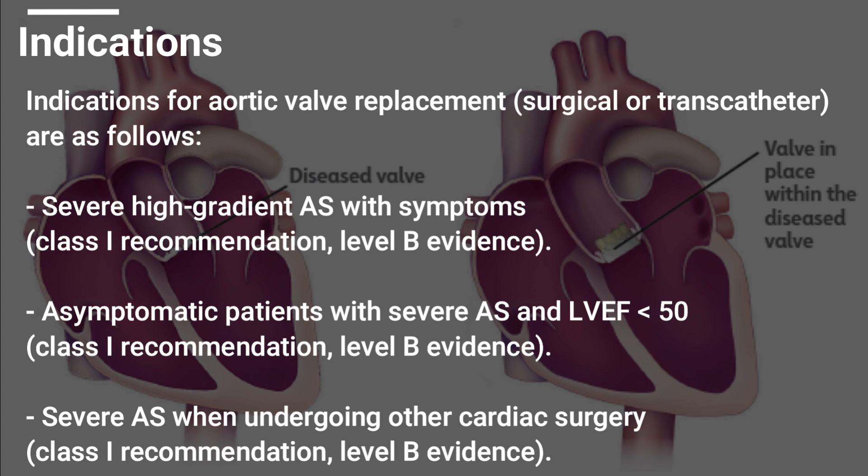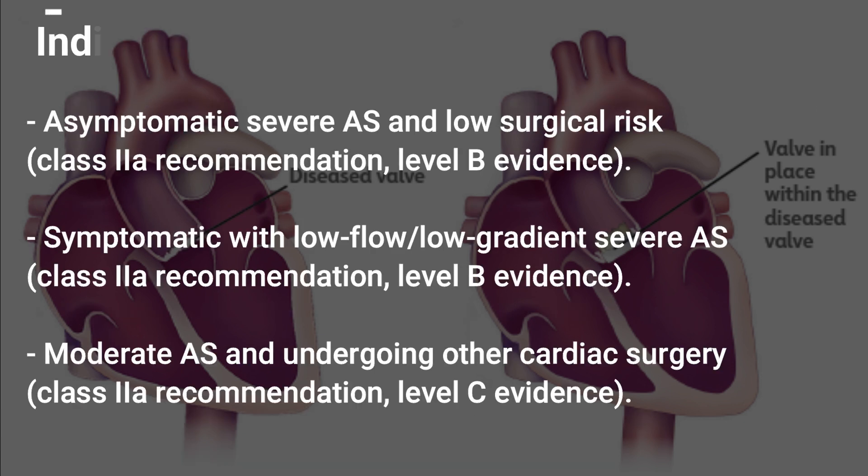The indications for aortic valve replacement, surgical or transcatheter, are as follows: severe high-gradient aortic stenosis with symptoms; asymptomatic patients with severe aortic stenosis and LVEF less than 50%; severe aortic stenosis when undergoing other cardiac surgery; asymptomatic severe aortic stenosis with low surgical risk; and symptomatic low-flow, low-gradient severe aortic stenosis.